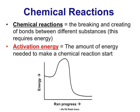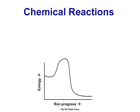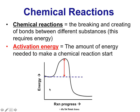The activation energy is the amount of energy needed to make a chemical reaction start. Looking at this diagram, the x-axis shows reaction progress or change over time, and the y-axis shows energy level. In the beginning of a chemical reaction there's a certain amount of energy, and then we have to input this amount of energy — the red line represents the activation energy. That's how much energy you have to put in to get this reaction to start.